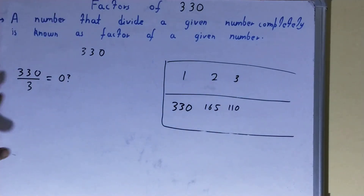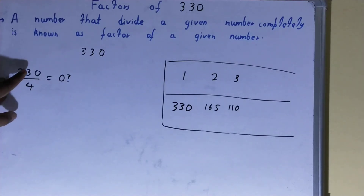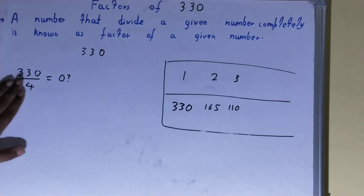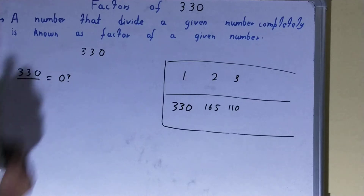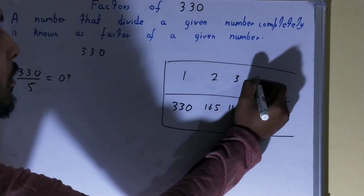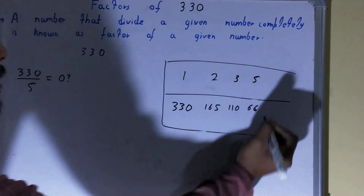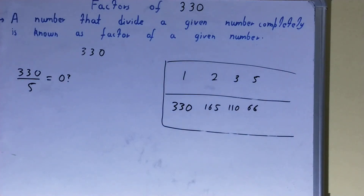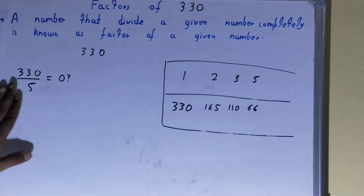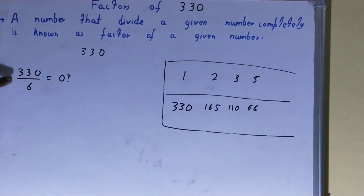After 3, we will check with 4. 4 into 32 — no, not possible. With 5, yes, it is possible because the last digit is 0. So 5 is a factor. And 5 into what times? 5 into 66 times. So 5 is a factor and 66 will also be a factor.